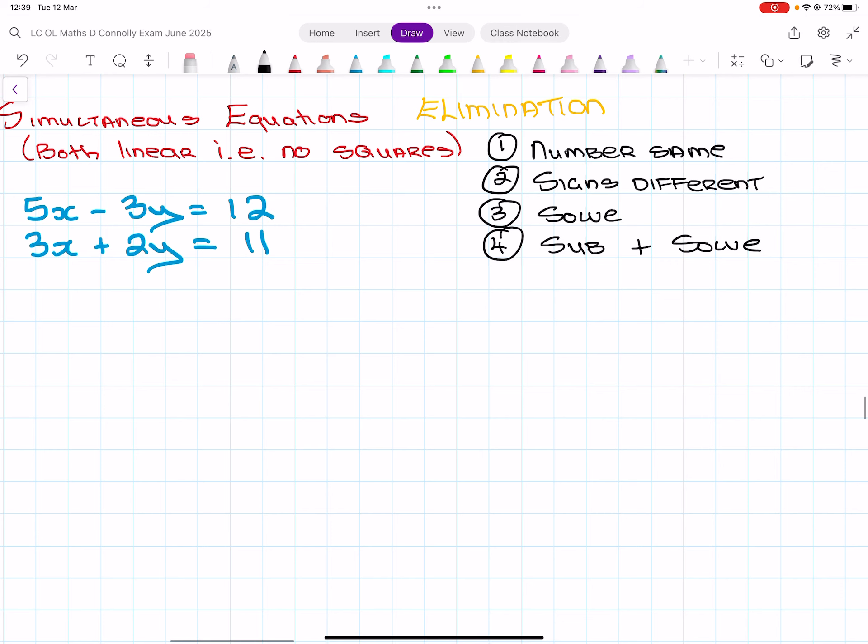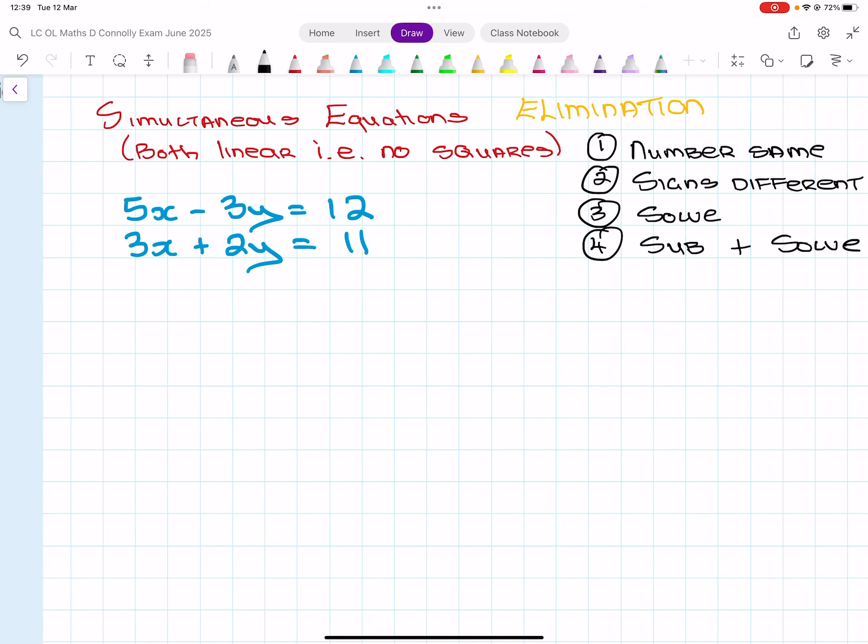Okay, so the first step is to make the number the same. I always do y. Okay, so forget about anything else, just look at these two numbers. So I need to come up with a number that I can multiply each of these by so that I end up with the same number. So I'm kind of looking to go three times what makes, two times what makes, and I need it to make the same number. So the obvious number is six.